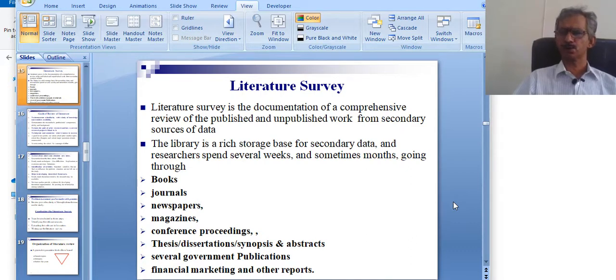Secondary sources are those sources which are already collected or written by someone else for their own purpose, but they might have some relevance with our research. These are already published documents.